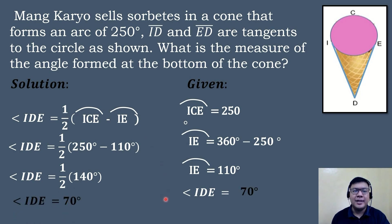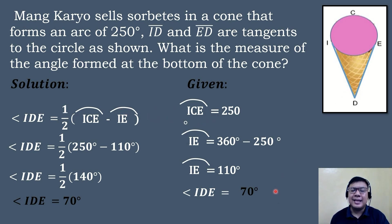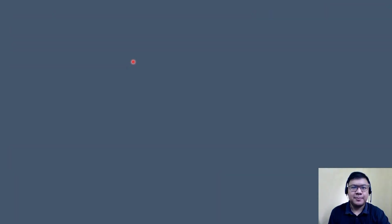So the measure of the angle formed at the bottom of the cone is equal to 70 degrees. So let's have our next problem.